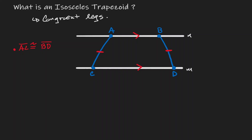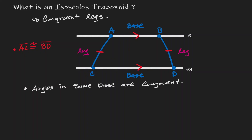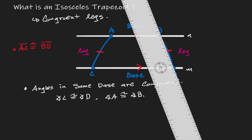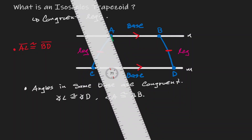So let's label this trapezoid. Now what's so special about an isosceles trapezoid? Well, the angles that are on the same base are congruent to each other — in this case, angle C and angle D, and also angle A and angle B. Why is this true? Let's visualize this. Let's consider line segment BD and construct a parallel line coming from point A.